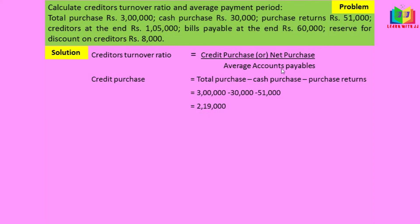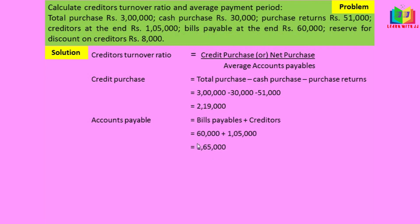For average accounts payable, we only have the ending balances — no opening balances are given. Creditors at end is 1 lakh 5,000 and bills payable at end is 60,000. We simply add them: bills payable plus creditors equals 1 lakh 65,000 as accounts payable. If both opening and closing were given, we would calculate the average; otherwise we take the accounts payable directly.